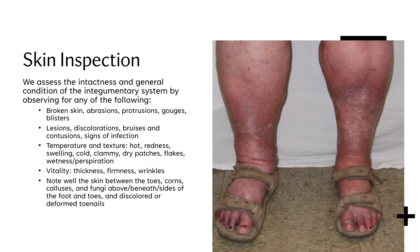In terms of skin inspection, we assess the intactness and general condition of the integumentary system by observing for broken skin, abrasions, protrusions, gouges and blisters, lesions, discolorations, bruises and contusions, and signs of infection. Also assess temperature and texture — hot, redness, swelling, cold, clammy, dry patches, flakes, wetness, and perspiration — as well as skin vitality: thickness, firmness, and wrinkles. Note well the skin between the toes; look for corns, calluses, and fungi above, beneath, or on the sides of the foot and toes, and check for discolored or deformed toenails.